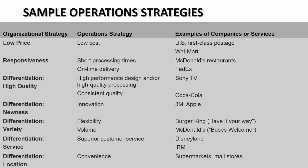Differentiation is an operations strategy where an organization attempts to stand out from the competition. Differentiation in the area of high quality focuses on high performance design and consistent quality — like Sony Television and Coca-Cola, which tried to change its formula in the 80s with New Coke but it bombed, so they've maintained consistent quality. Differentiation through newness focuses on innovation, like Apple and many technology companies trying to differentiate themselves through innovation.